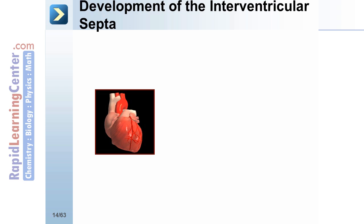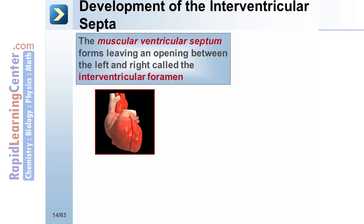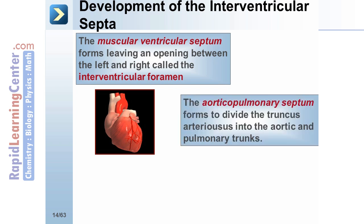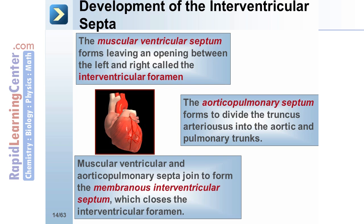Development of the interventricular septum takes place in three steps. In step one, the muscular ventricular septum forms, leaving an opening between the left and right called the interventricular foramen. In step two, the aorticopulmonary septum forms to divide the truncus arteriosus into the aortic and pulmonary trunks. In step three, the muscular ventricular and aorticopulmonary septa join to form the membranous interventricular septum, which closes the interventricular foramen.